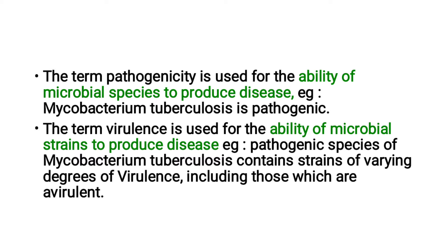For example, Mycobacterium tuberculosis is pathogenic. The term virulence is used for the ability of microbial strains to produce disease. For example, pathogenic species of Mycobacterium tuberculosis contains strains of varying degrees of virulence, including those which are avirulent.